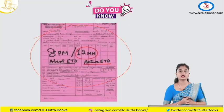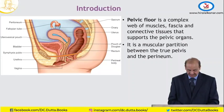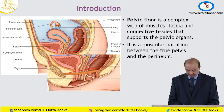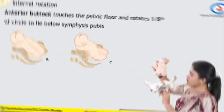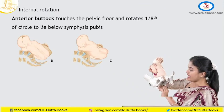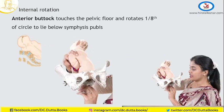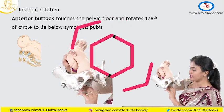What is a cardiotocograph? This structure is the pelvic floor. This is how it enters at an angle of the left oblique diameter.